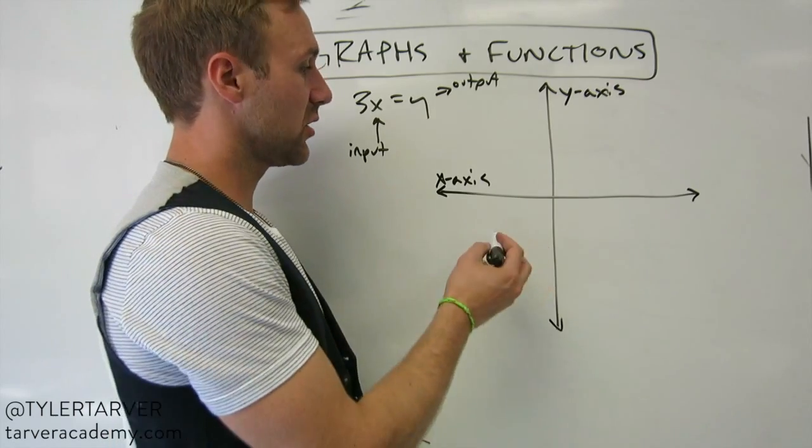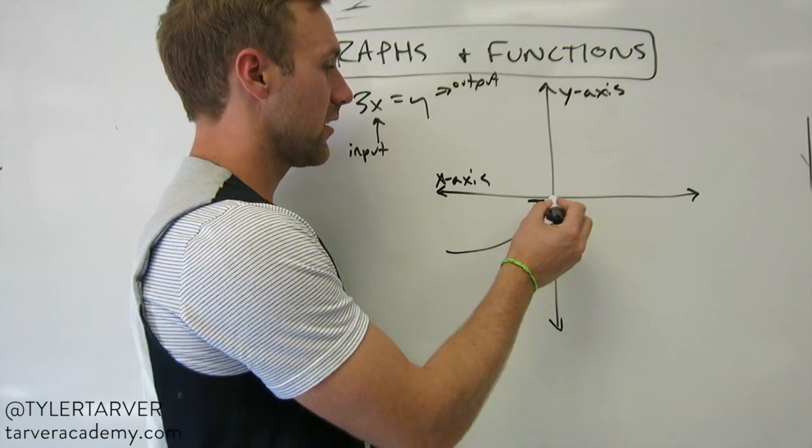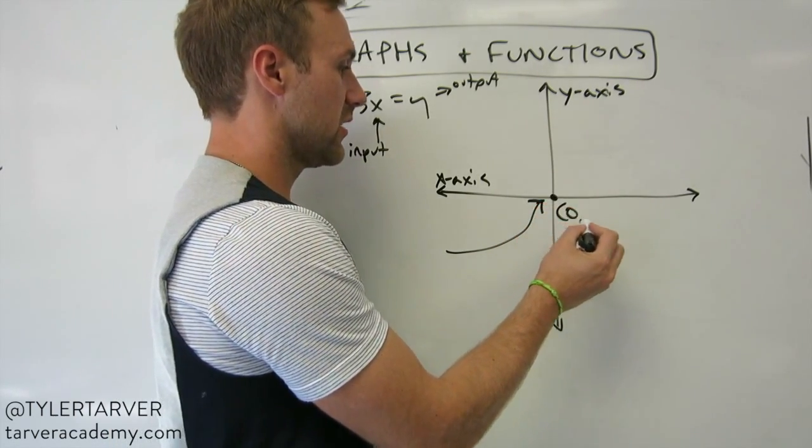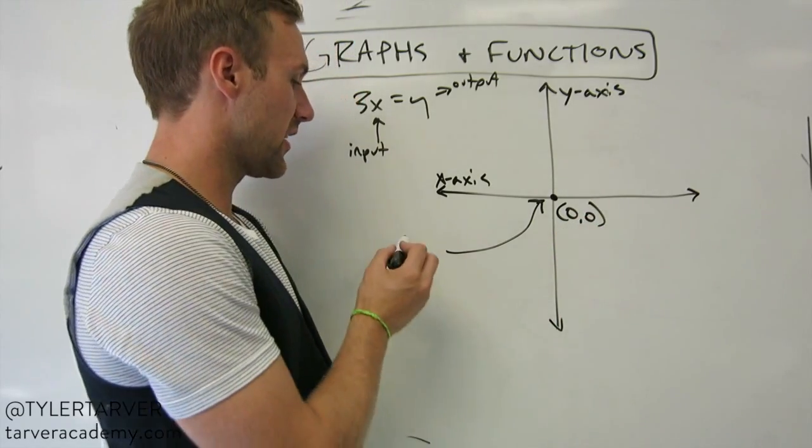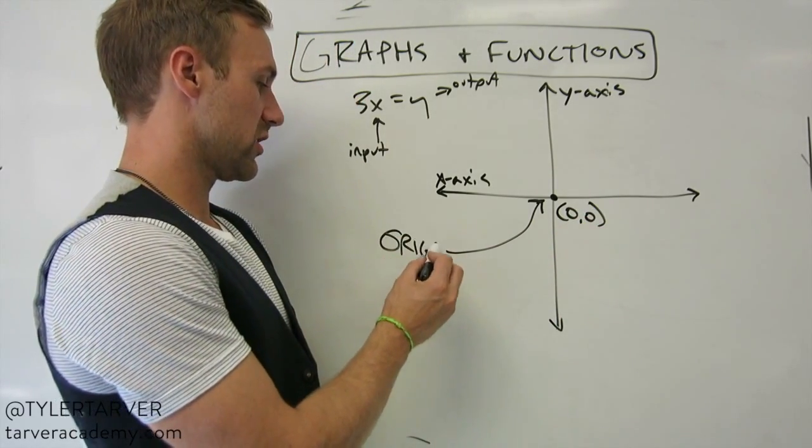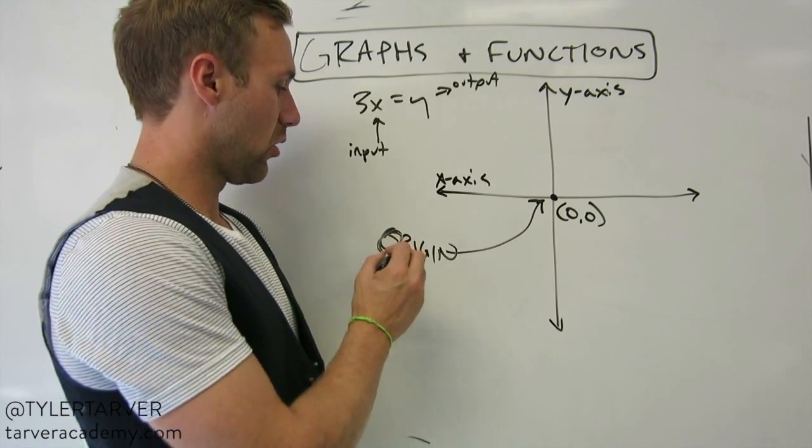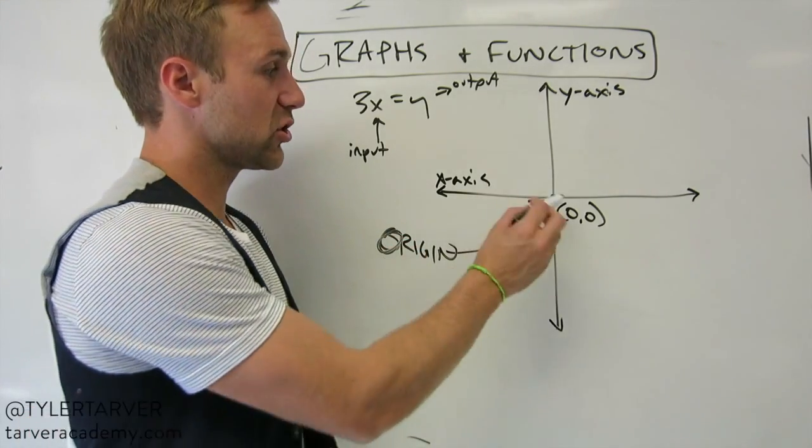Let's say also in a coordinate, that little guy right there, that's the ordered pair of zero, zero. That is always called your origin. I don't know why I wrote it like grunge, but origin. That's your starting point.